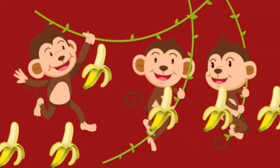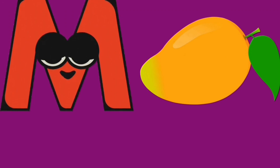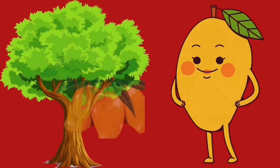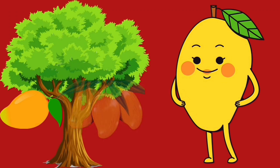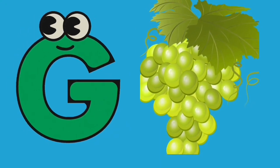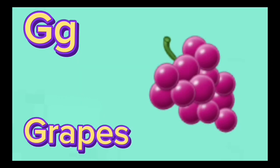Monkeys are eating bananas. M for Mango. Its color is yellow. It starts with the letter M. This is the tree of mango. G for Grapes. Its color is green and purple. It starts with the letter G.